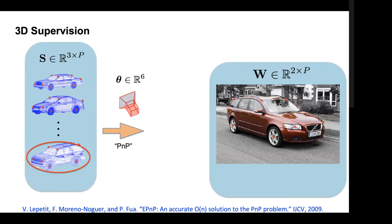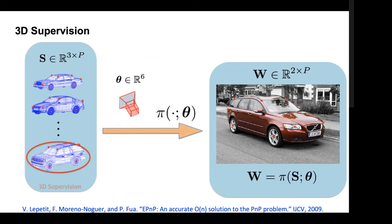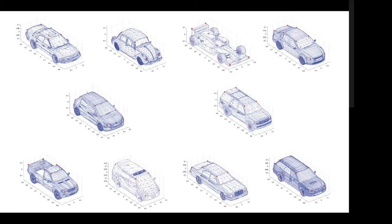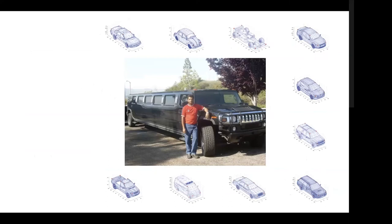Doing this with real-world images is really important because with synthetic rendering you have a render gap between real and synthetic images. If we do this correctly, the estimated six degrees of freedom should match the 2D projections. But this is not a good idea for a couple of reasons. For specific object categories like cars, the shape variation seen in images may not match the variation in our offline CAD model dictionary. Also, unusual vehicles like stretch SUVs may not have good 3D shapes available.